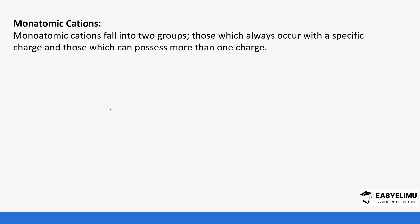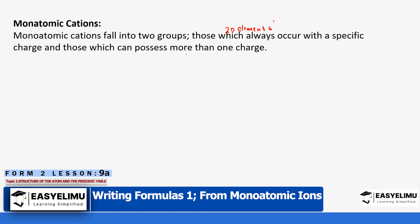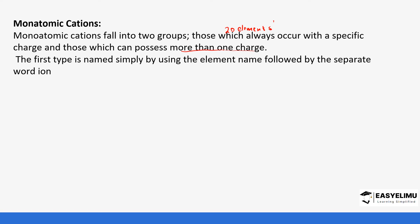The monoatomic ions can fall on both sides - cations and anions. When naming monoatomic cations they usually fall into two groups: those that can occur with a specific charge, which are usually the 20 elements, and those that can possess more than one charge, which are usually the transitional elements. When writing the chemical names for cations, we usually leave the final word as 'ion'.